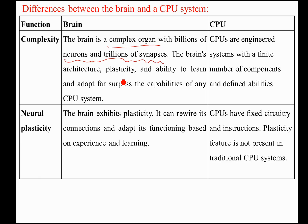Regarding neural plasticity, the brain exhibits plasticity — it can rewire its connections and adapt its functioning based on experience and learning. A human being, through learning and experience, can rewire neural connections over time. However, a CPU has fixed circuitry and instructions, and the plasticity feature is completely absent in traditional CPU systems.